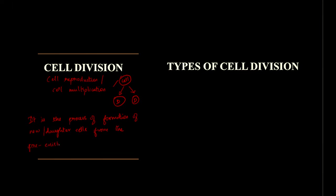Pre-existing means the cell which is already present. So this cell is already present in the diagram, so this is called as pre-existing cells. From the pre-existing cell, it is also called as a parent cell.